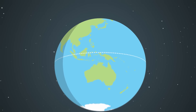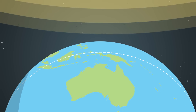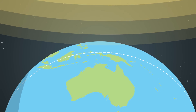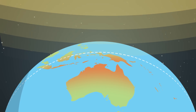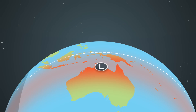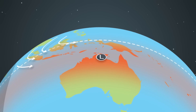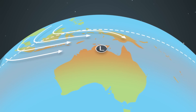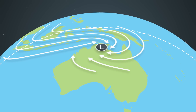The Australian monsoon develops in response to summertime heating over the northern Australian region, when the continent warms at a faster rate than the surrounding oceans. This sets up a giant sea breeze circulation, drawing in moisture from these oceans over the lower pressure on the land.